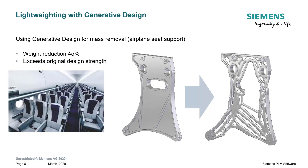That may not seem important, but if you think about the number of seat supports in a typical airplane, multiplied by the number of miles that airplane will fly in a typical year, that's a lot of savings on the resources needed to propel that airplane.